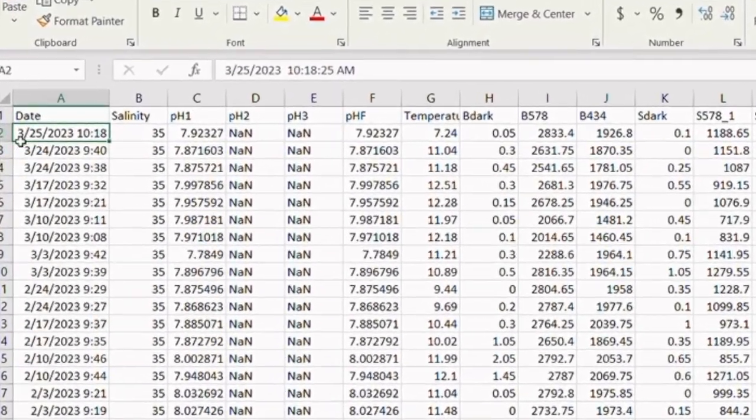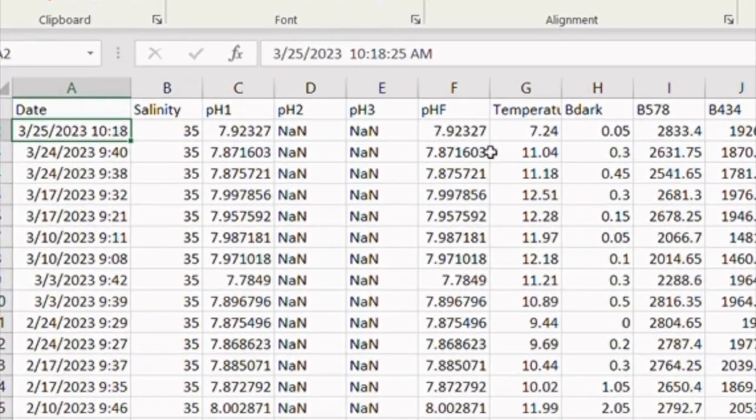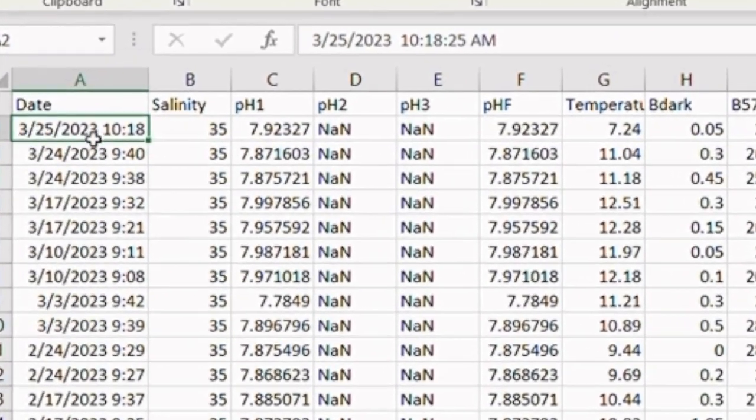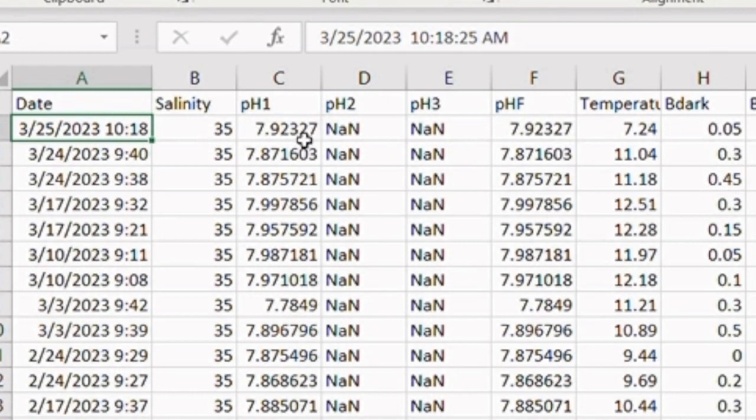So the latest measurement is on the top here, and it reports the date, the time, salinity, and the pH. If they're done in triplicate, you get multiple readings here.